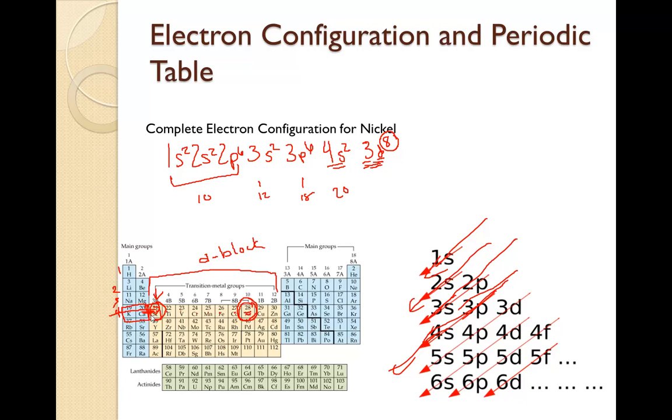So there is a correlation between the electron configuration and the block in the periodic table. This is the s-block, so all of these will end in s. This is the p-block, all of these will end in p, the d-block, and at the very bottom is the f-block.